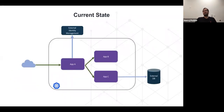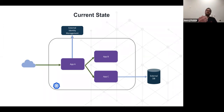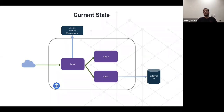I'll start with a simple example of a microservice environment running in a Kubernetes cluster. Here you have application A, which talks to application B and app C — they can be written in different languages. Traffic comes from the internet, hits application A, which reaches out to an external identity management service like Keycloak or Cognito for user management. App C reaches out to an external database — a SaaS managed service like DynamoDB or Bigtable. It's a very simple architecture, and we'll use it as a baseline and incrementally add complexity.